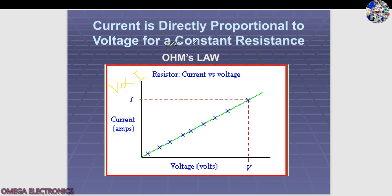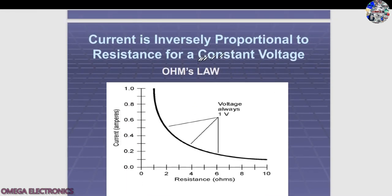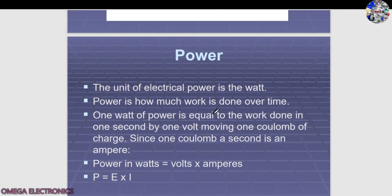From Ohm's Law, voltage is directly proportional to current at constant resistance. A graph of current versus voltage is linear and constant for a fixed resistance. Current is inversely proportional to resistance at constant voltage — as the value of current increases, the value of resistance decreases, and vice versa. Power is how much work is done over time. One watt of power equals the work done in one second by one volt moving one coulomb of charge.